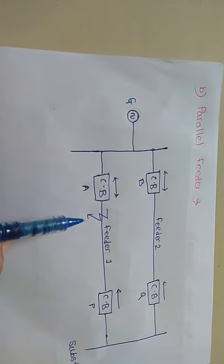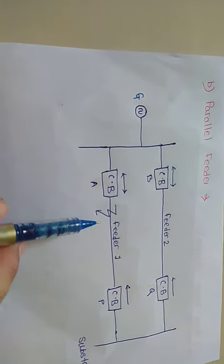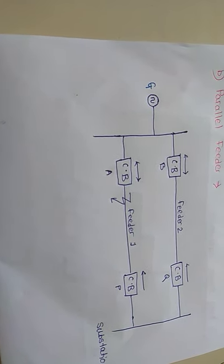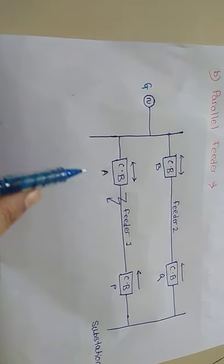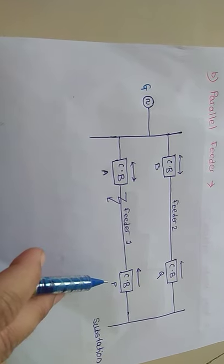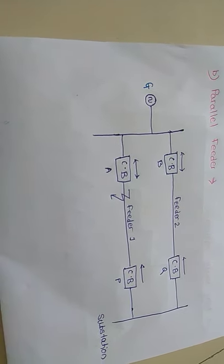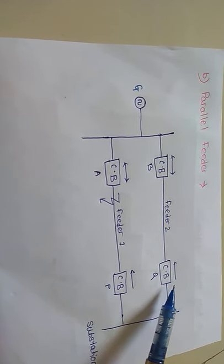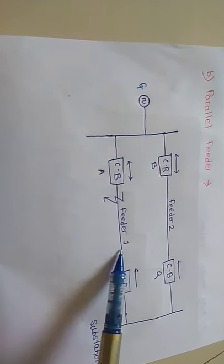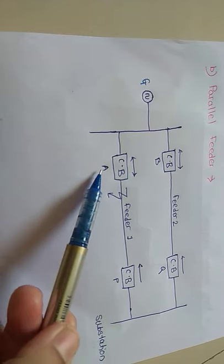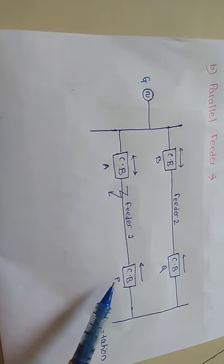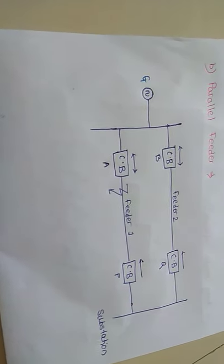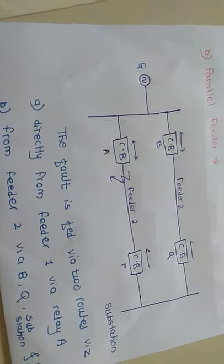Suppose a fault occurs on feeder 1. It is desired that only circuit breakers A and P should open to clear the fault, while feeder 2 remains in the system and continues to supply.